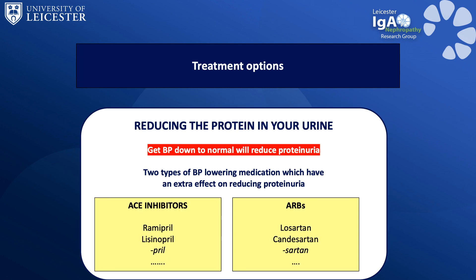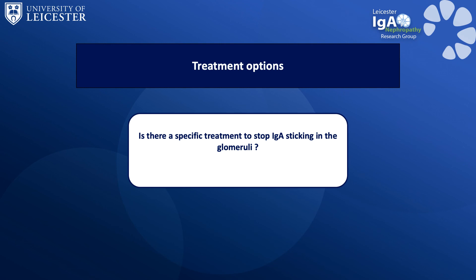The blood pressure-reducing tablets that we know work best in IgA nephropathy are the ACE inhibitors or the angiotensin receptor blockers (ARBs). ACE inhibitors are drugs that end in '-pril', such as ramipril and lisinopril. ARBs end in '-sartan', so drugs like losartan and candesartan. We would hope that all patients with IgA nephropathy are on one of these drugs at the maximum dose they can tolerate. You may need additional tablets to control blood pressure, which is not uncommon, but the first tablet tried should be an ACE inhibitor or an ARB.